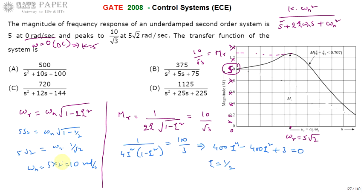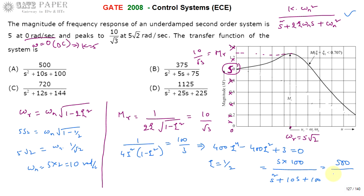We have calculated k equal to 5, omega_n equal to 10, and zeta equal to 1/2. The transfer function is: k times omega_n squared equals 5 times 100 equals 500 in the numerator, divided by s squared plus 2 times zeta times omega_n s plus omega_n squared, which gives s squared plus 10s plus 100. So the transfer function is 500 divided by (s squared plus 10s plus 100). The right answer for this question is A. Thank you.